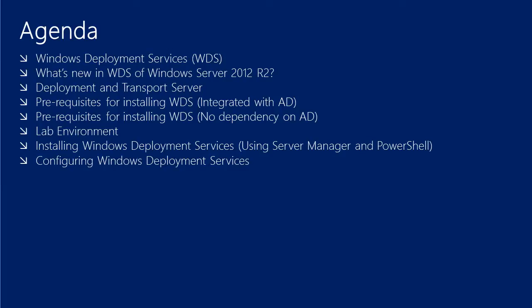So, what is the agenda of this video? We'll see an introduction of Windows Deployment Services WDS, what is new in WDS of Windows Server 2012 R2, and what are the two different role services which we have in WDS, which is Deployment Server and Transport Server. We'll cover prerequisites for installing WDS in an Active Directory environment and also in a non-Active Directory environment. We'll look at the lab environment set up for WDS, then perform the installation of WDS role using Server Manager or PowerShell, and finally configure Windows Deployment Services.